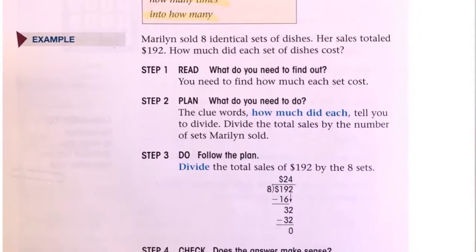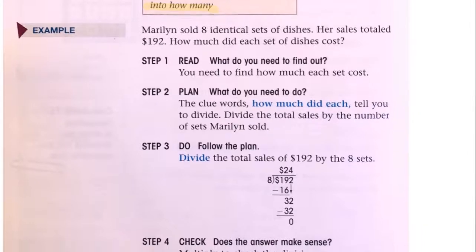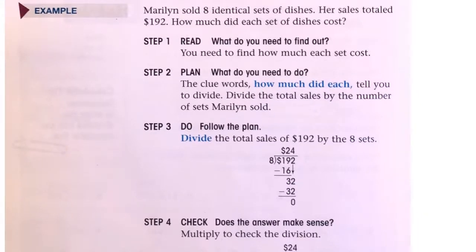Let's take a look at the first example. Marilyn sold eight identical sets of dishes. Her sales totaled $192. How much did each set of dishes cost?